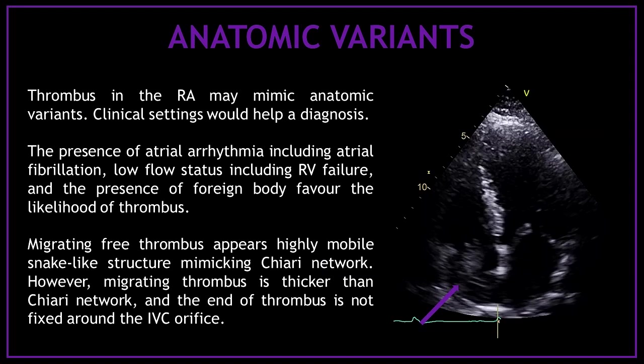Thrombus in the right atrium may mimic anatomic variants, and clinical context will help with diagnosis. The presence of atrial arrhythmia including atrial fibrillation, low flow status including right ventricular failure, and the presence of a foreign body favor the likelihood of thrombus. Migrating free thrombus appears as a highly mobile, snake-like structure mimicking the Chiari network. However, migrating thrombus is thicker than the Chiari network, and the end of the thrombus is not fixed around the inferior vena cava orifice.